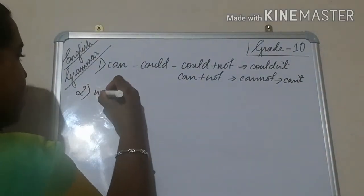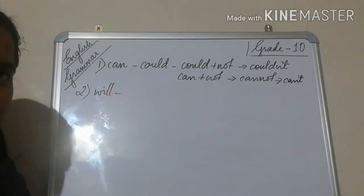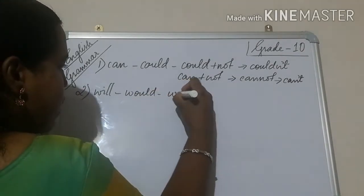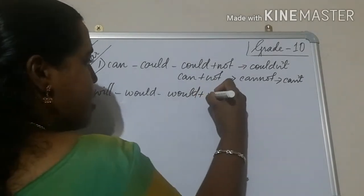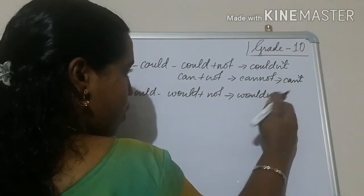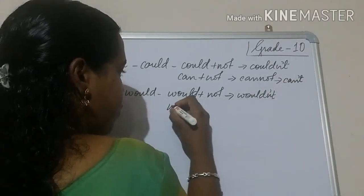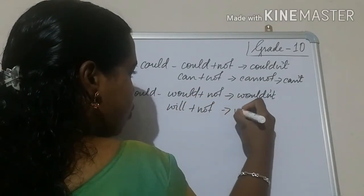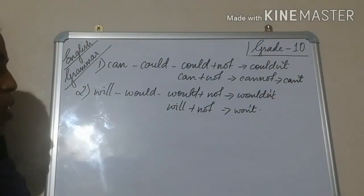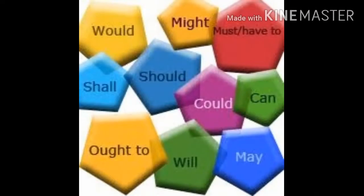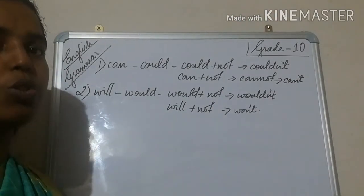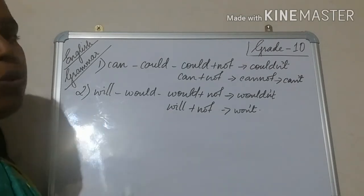The next one is will. When you want to show your determination, you will be using the word will. And the past tense of will is would. The negative form of would is would plus not — wouldn't. And for will, will plus not becomes won't. For example: She won't be turning up for the marriage today. So in a negative way, when you want to show your determination or a strong obligation, you will be using such words.